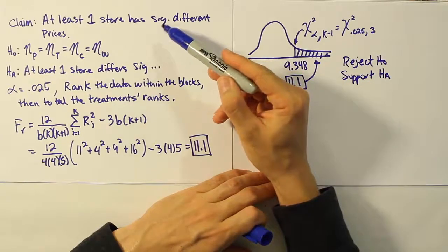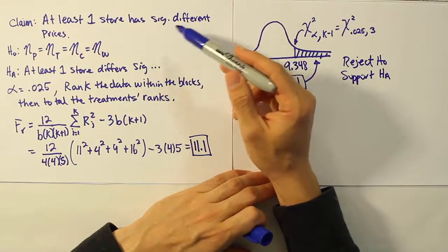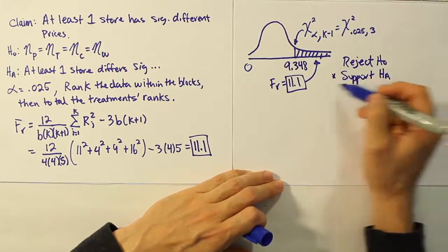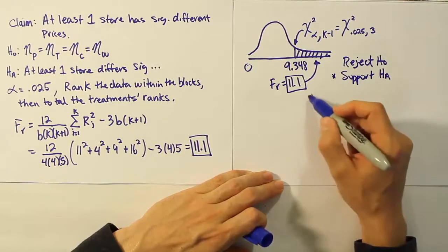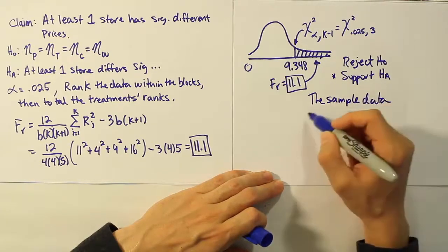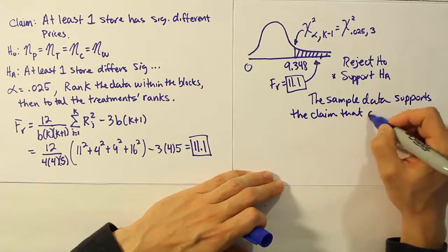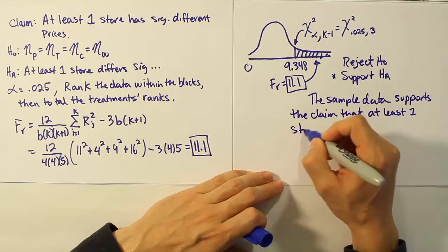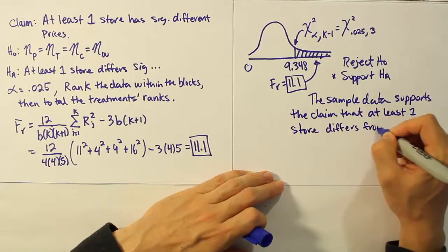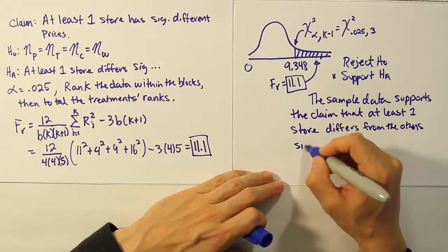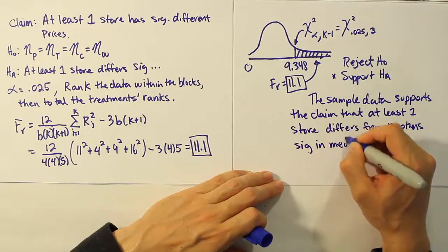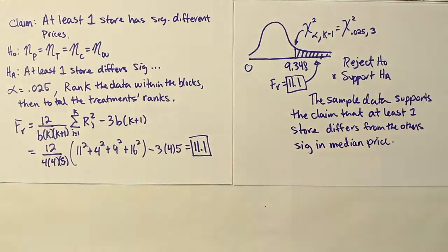From there, when you look at your claim, you see that it says at least one store has significantly different prices, which is the same as HA. So we're going to say the sample data supports the claim that at least one store differs from the others significantly in median price. So the idea is that at least one store is more expensive than the others, or at least one store is less expensive than the others. Either way, the idea is that at least one store differs from the rest.